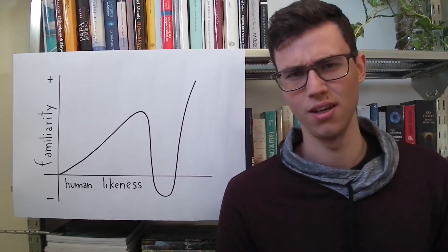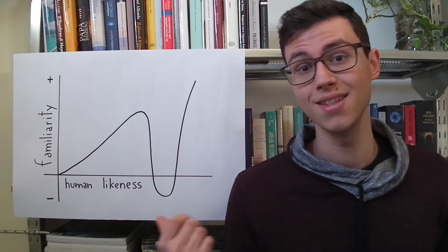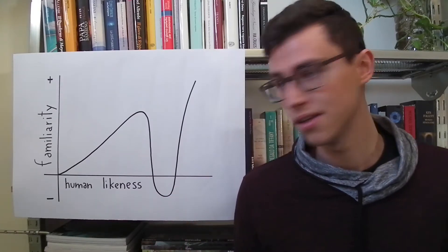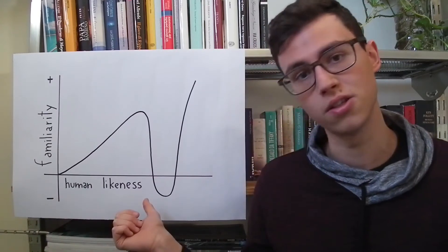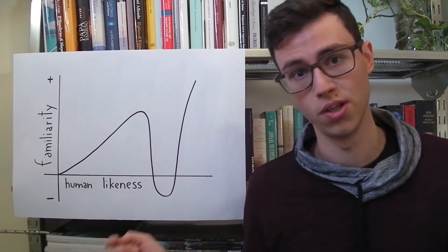What is the Uncanny Valley? It's a theory that was created by Professor Masahiro Mori, a Japanese professor in 1970, that tries to link the human likeness of the robot, which means the appearance of the robot, to the familiarity that we have towards the robot.